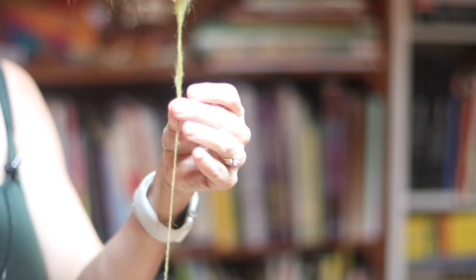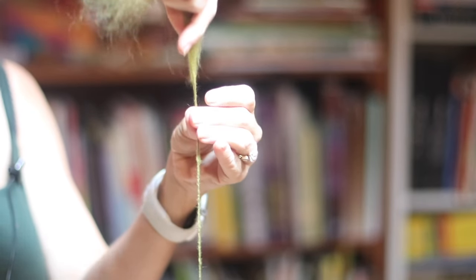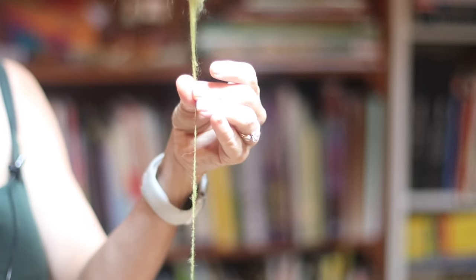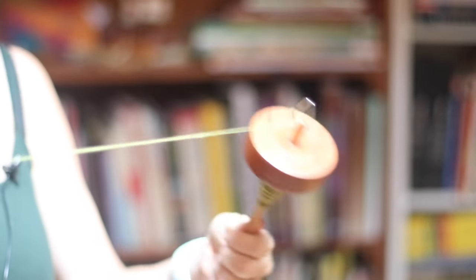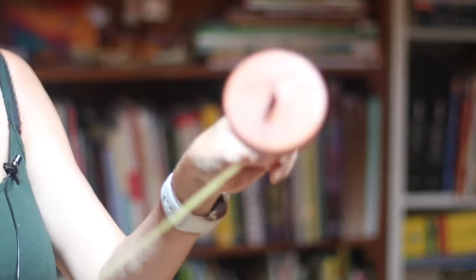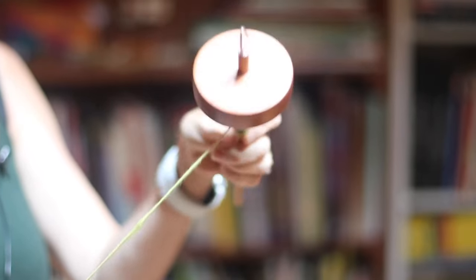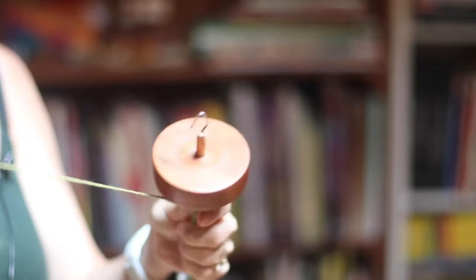So spin it - it's a constant movement and it takes a long time to be able to get a consistent string. When you've almost reached the bottom or your comfort level, you're going to take that and wind it onto your spindle, loop it again, and we're going to start again.